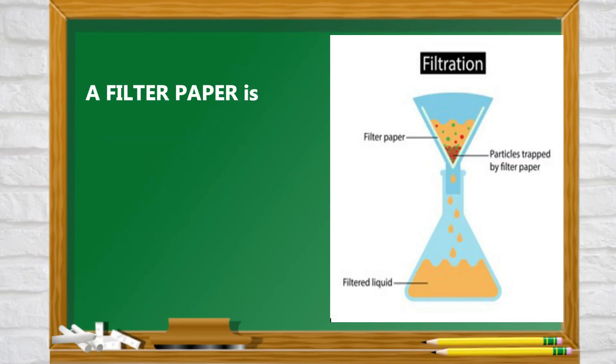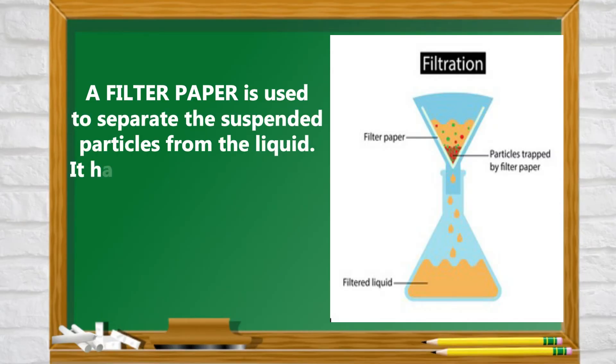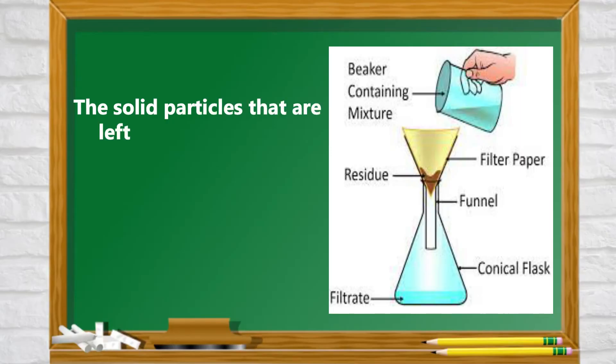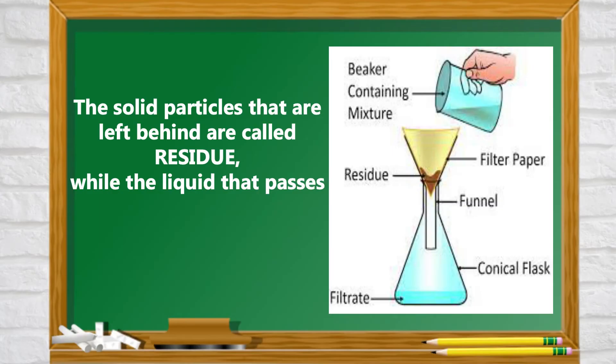A filter paper is used to separate the suspended particles from the liquid. It has tiny pores that allow the liquid part of the mixture to pass through it. The solid particles that are left behind are called residue while the liquid that passes through the filter paper is called the filtrate.